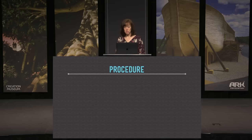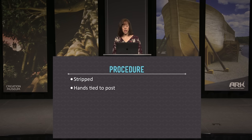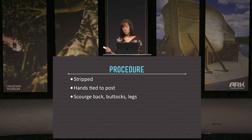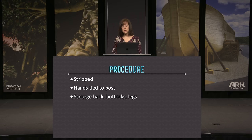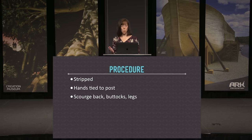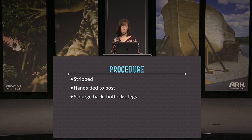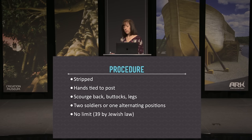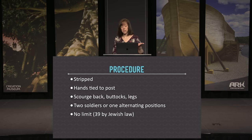The individual is stripped and their hands are tied or chained to a post. They scourge the back, buttocks, and legs. In the movie they turn Jesus over and scourge the front, but that's likely for dramatic effect — doing so would risk ripping into vital internal organs and causing death before the crucifixion. Two soldiers alternated positions and there was no limit. Jewish law said 39 lashes, but there's no reason to think they obeyed the law in this case given all the other violations.